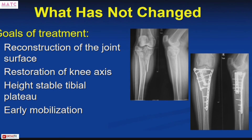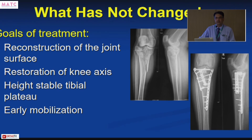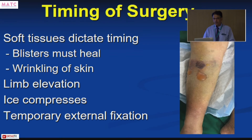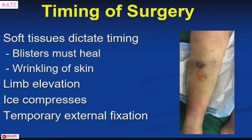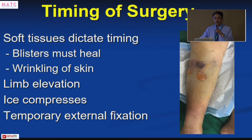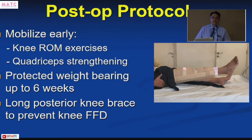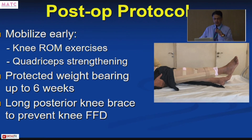Despite all these new developments, the goal of treatment has not changed. Whether using older open reduction methods or any new technique, you need to reconstruct the articular surface as anatomically as possible, restore the knee axis, and achieve a stable tibial plateau — since any shortening leads to instability from pseudo-laxity of the ligaments. What has also not changed is that soft tissues still dictate when to operate; do not proceed with fixation until soft tissues have settled.